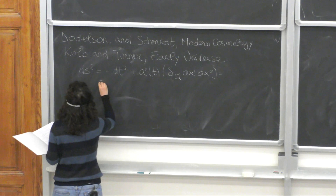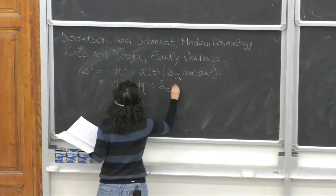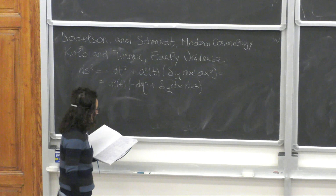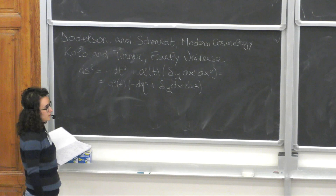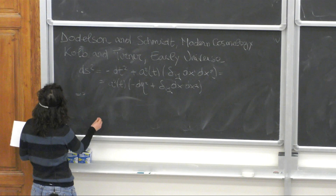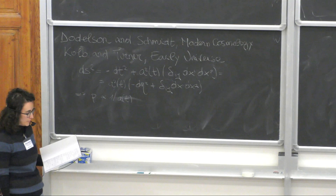Introducing the conformal time, we can rewrite the FRW metric by factoring out the scale factor. Using this metric and writing down the geodesic equation — which I will not derive here for the sake of time — we can obtain one of the first important results in background evolution: the evolution of the momentum of a species, which scales as the inverse of the scale factor as the universe expands.